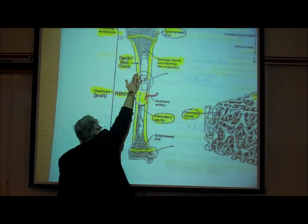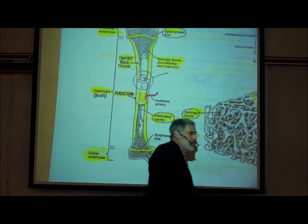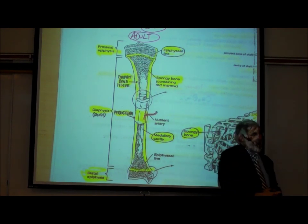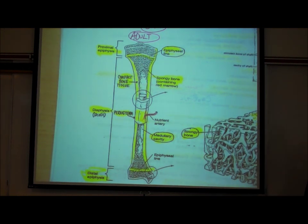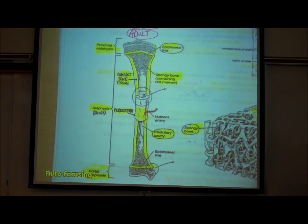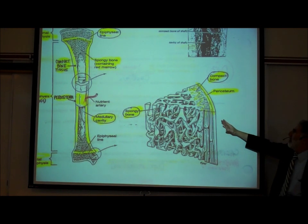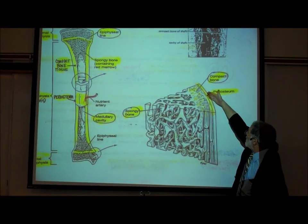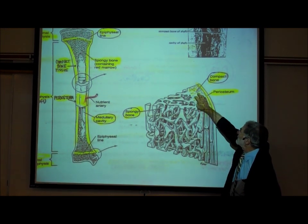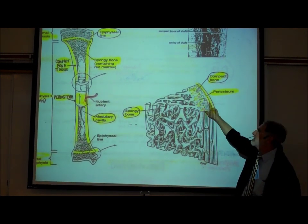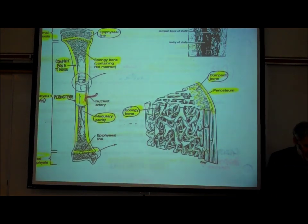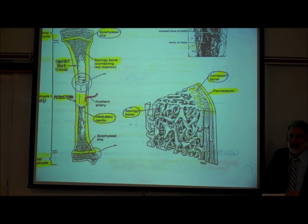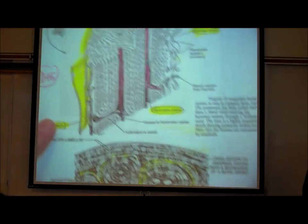Looking at a higher magnification cutaway section: on the outer surface is the periosteum, made of regularly arranged dense fibrous connective tissue — the same tissue as tendons, ligaments, dura mater, fascia, and perichondrium, as we learned on page D11. Just inside the periosteum is the very thick, dense compact bone tissue. And in the middle of the bone is the more porous spongy bone tissue.